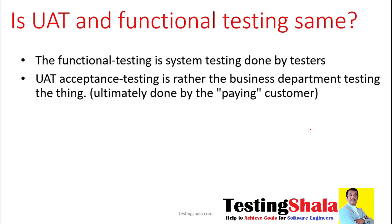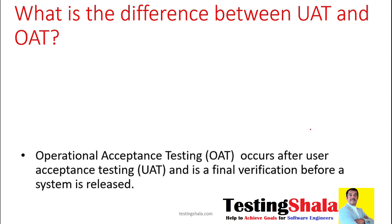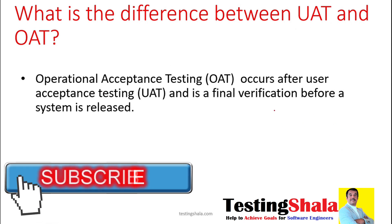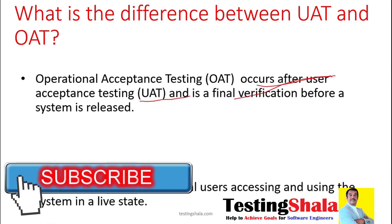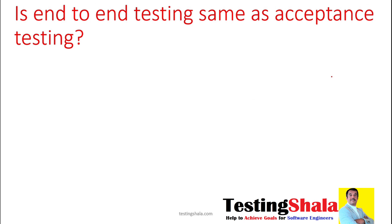What is the difference between user acceptance testing and OAT? OAT stands for operational acceptance testing. Operational acceptance testing normally occurs after UAT is performed. OAT normally employs the real user in accessing and using the system in a live state.